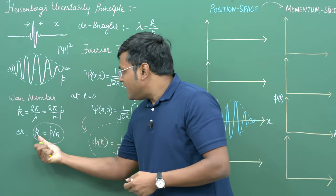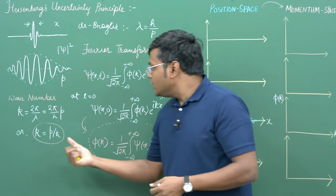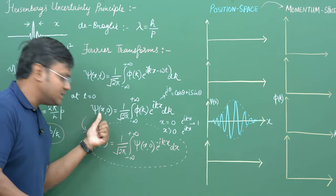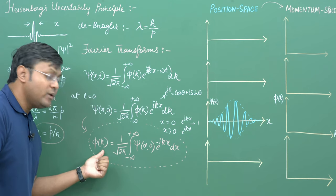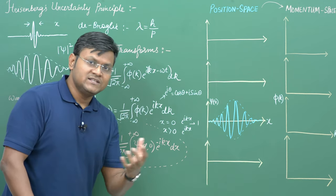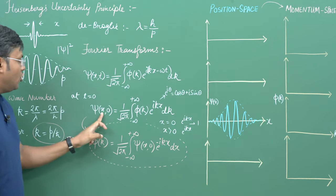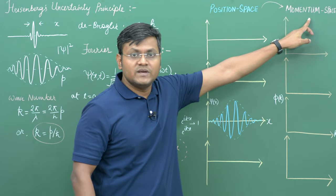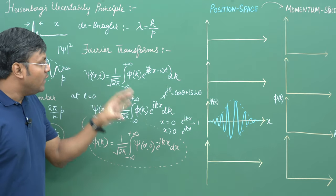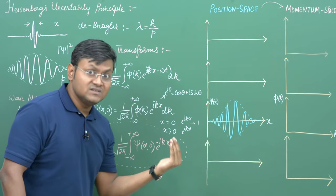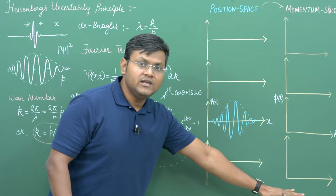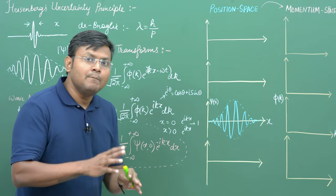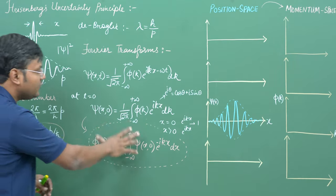We are going to take a look at the wave packet in position space versus the same wave packet in terms of the variable k or in momentum space. Let me give you a simple visual example of what it means to do a Fourier transform between signals.